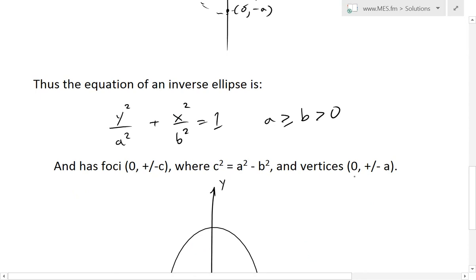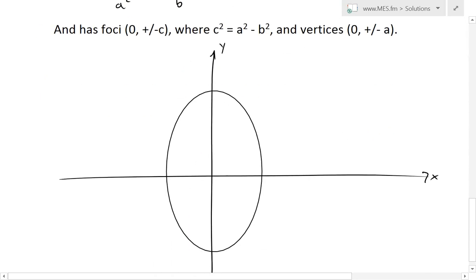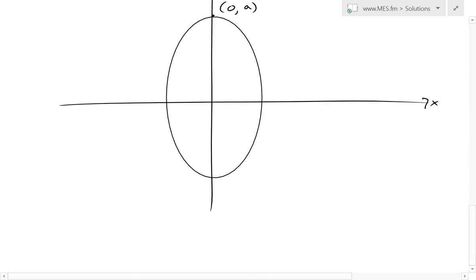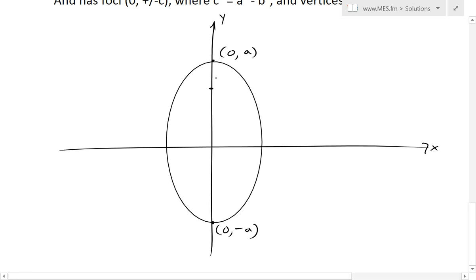now it's 0 and plus or minus a. So that's this point right here, 0 and a, this is at 0 and negative a, and this is our c points or focus points, this is 0 and c, and now this is 0 and negative c.